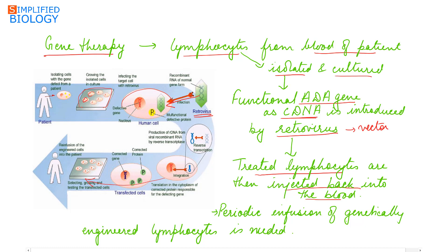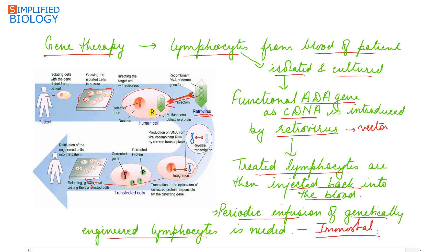Since these lymphocytes are not immortal — they have a limited life period after which they are destroyed — a periodic infusion of genetically engineered lymphocytes is needed on a regular basis.